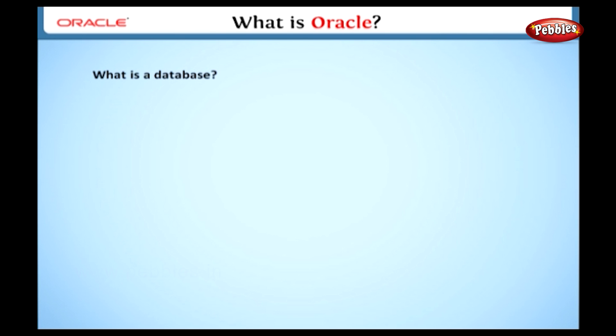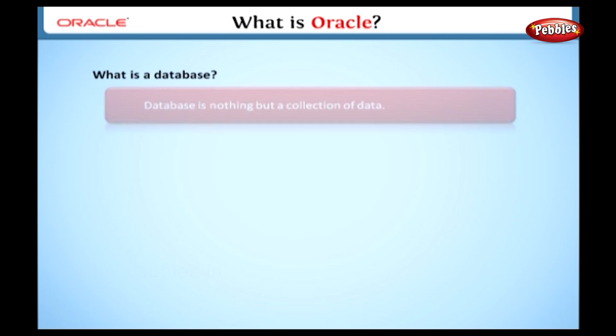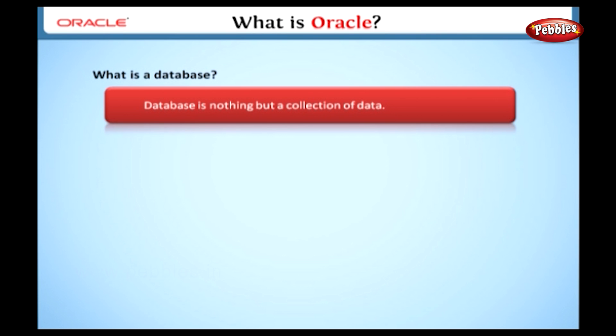First, what is a database? A database is nothing but a collection of data. For example, in olden days, all offices used paper to maintain the details and store them in a file. This is known as a database.